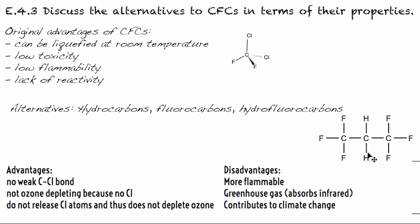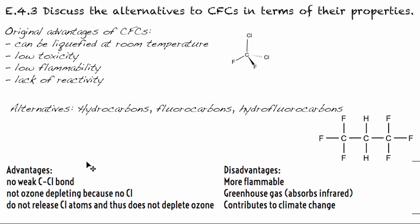What's the advantage and disadvantage of these alternatives? The advantage of all of these is that there's no weak carbon-chlorine bond. Fluorine is more electronegative, so this is a stronger bond, and when UV hits it, it's not as likely to break it like the chlorine-carbon bond in the chlorofluorocarbons. It's not ozone-depleting because there is no chlorine — it does not release chlorine atoms, and thus does not deplete the ozone.